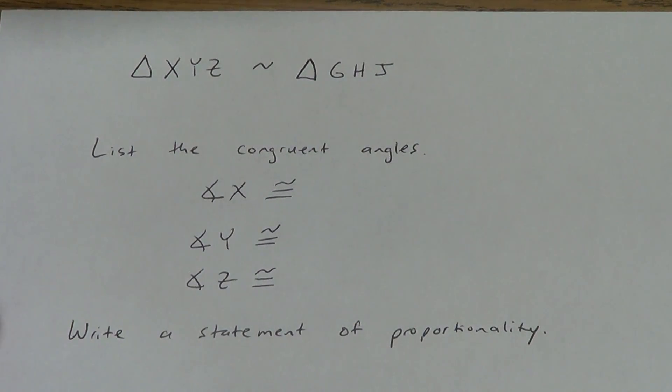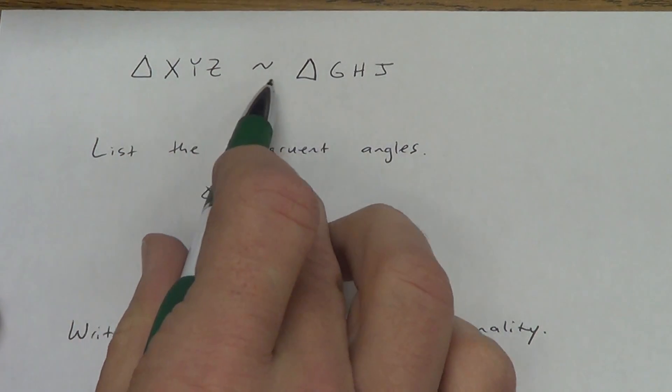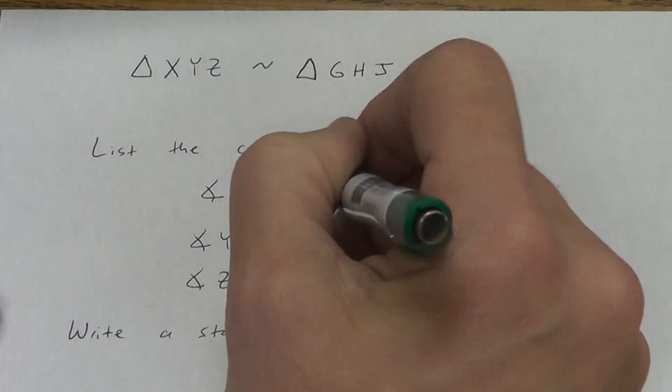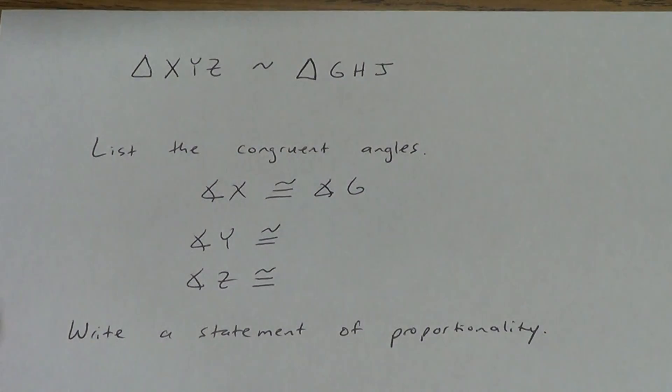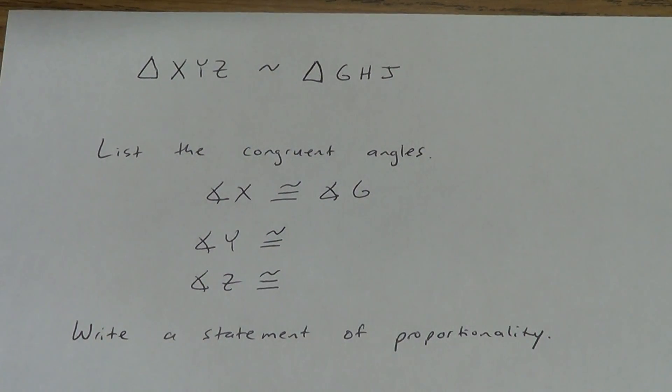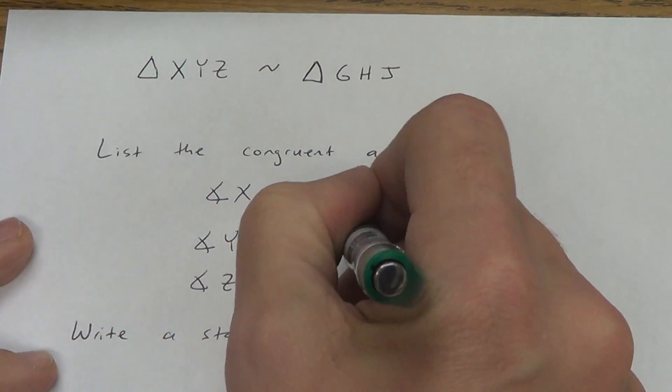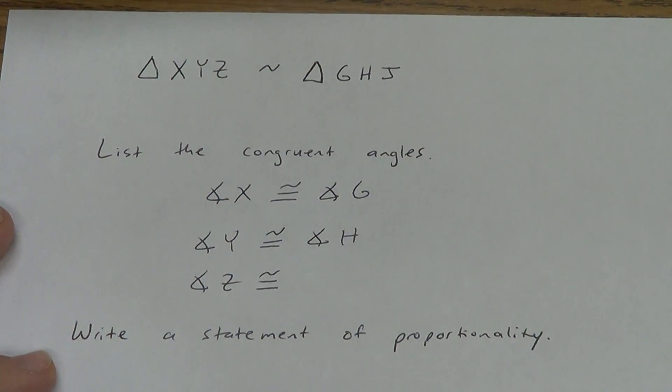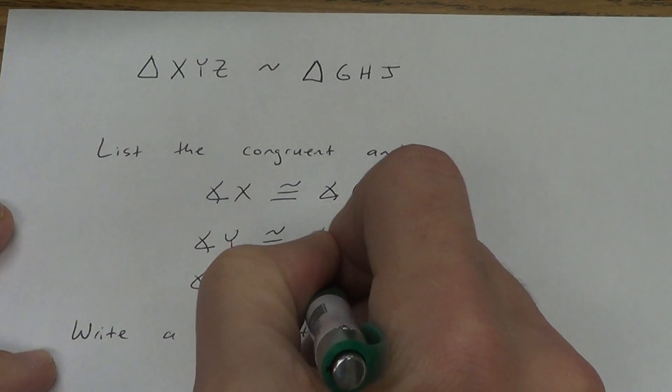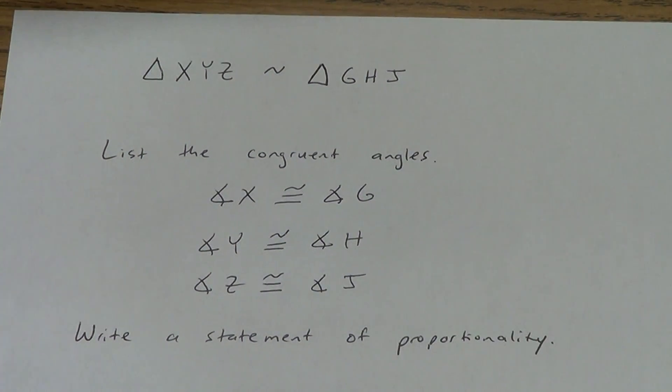Listing the congruent angles. It's a triangle. So, it has to have three angles. So, I'm just going to list three sets of congruent angles. Angle X is congruent to something. Angle Y is congruent to something. And angle Z is congruent to something. Remember, order is important. Angle X, the first letter, has to match up with angle G. What do you think angle Y has to match up with? Hopefully, you said angle H. And then angle Z, the last letter, has to match up with angle J. That's it. It's really simple.